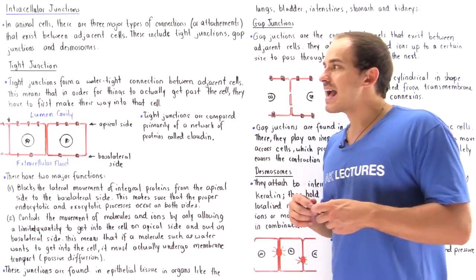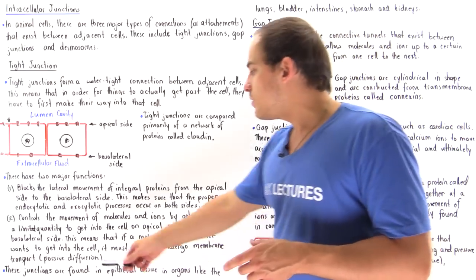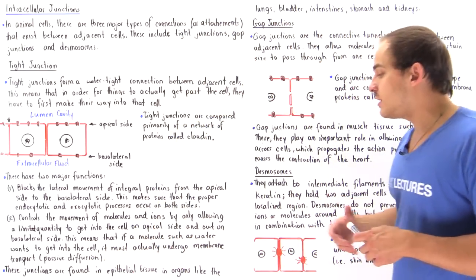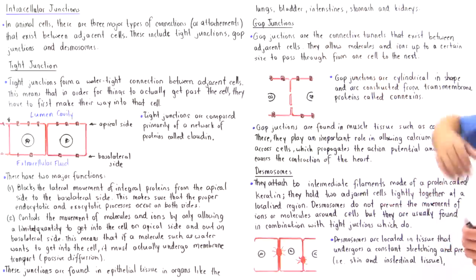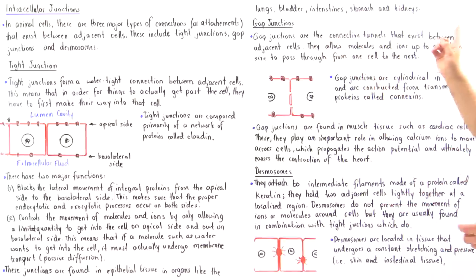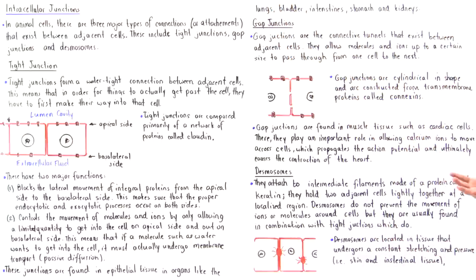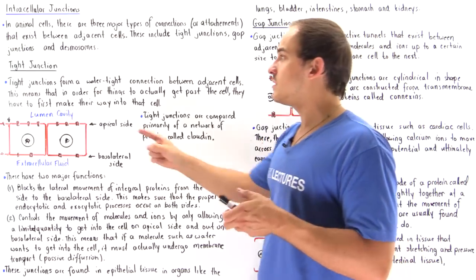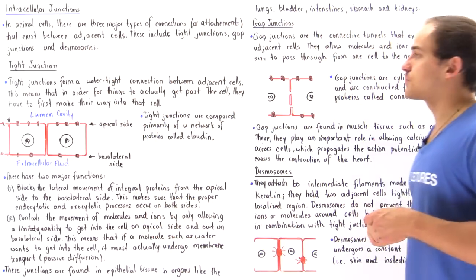Where exactly are these tight junctions found? These junctions are found in epithelial tissues such as lungs, bladder, intestines, stomach, and other organs — the different types of organs that contain epithelial tissue basically connected via tight junctions.